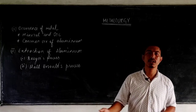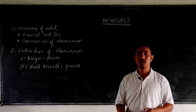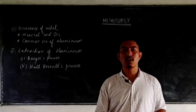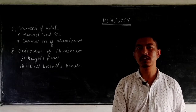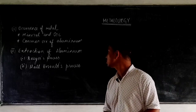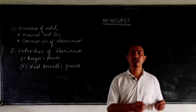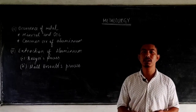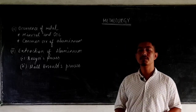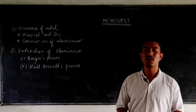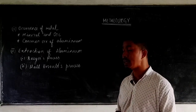Coming to the ore — the ore is also a mineral from where a metal is extracted industrially in a very cheap and convenient way. Therefore, we can say that all ores are minerals, but all minerals cannot be an ore. An ore is only that part of a mineral from where the metals can be extracted profitably.